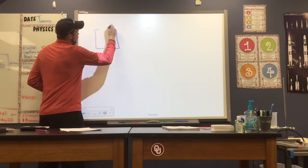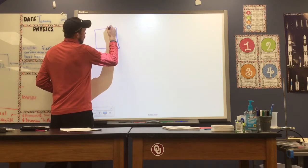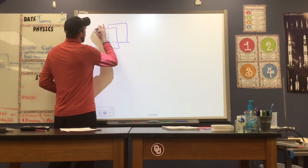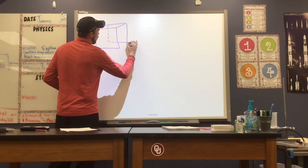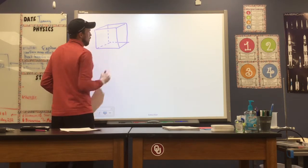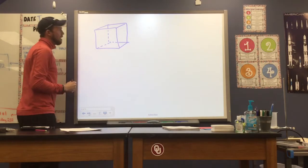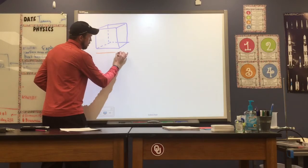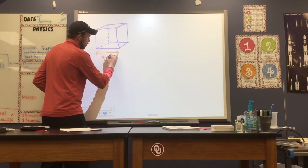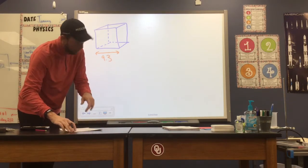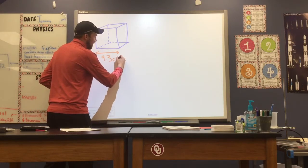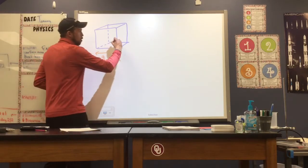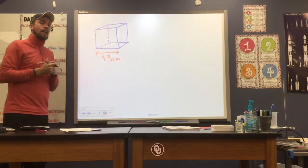So we have this cube here. I'll do my best to draw this in three dimensions for us. So we have our cube, and we're told that that cube is about half a centimeter thick, and that its dimensions are about 9.3 centimeters on a side. Now, a cube is kind of a three-dimensional square, so that means the dimensions will be the same on every side of the cube.